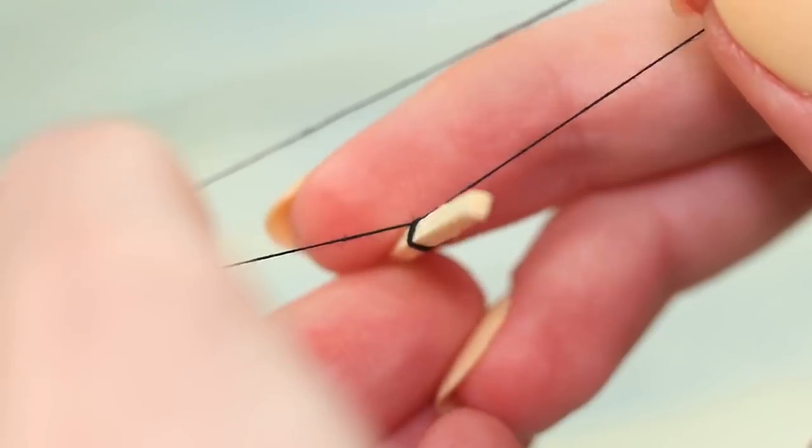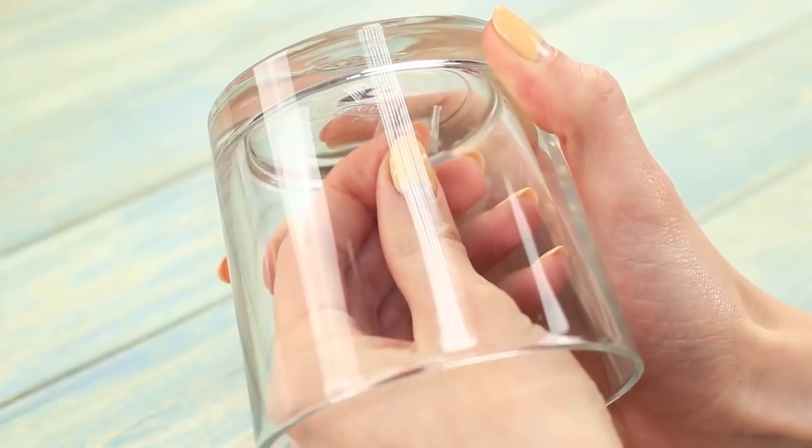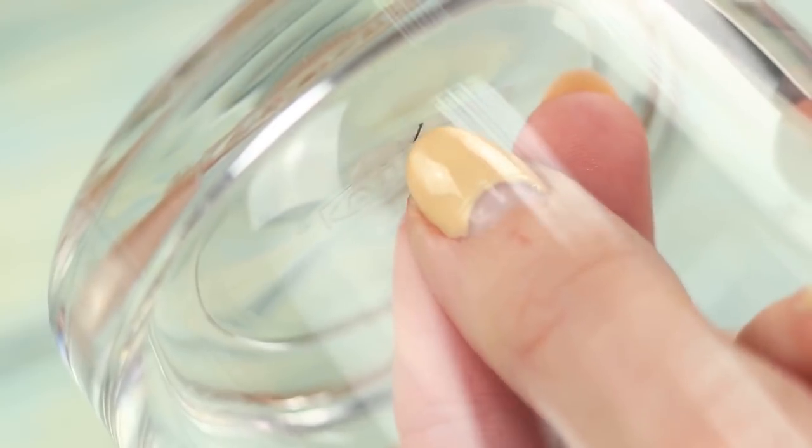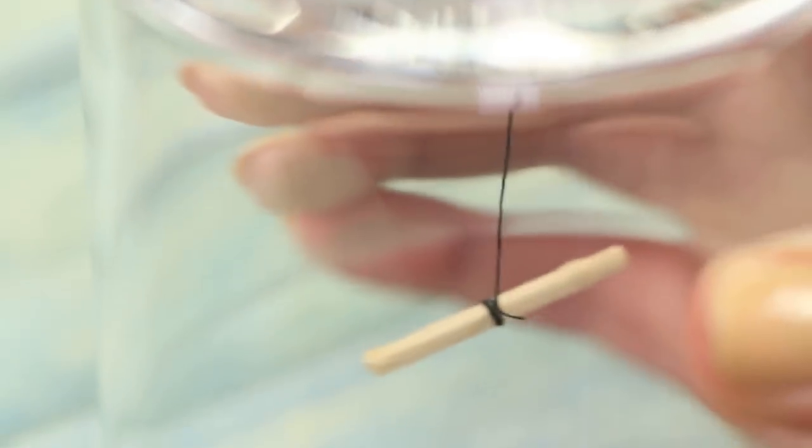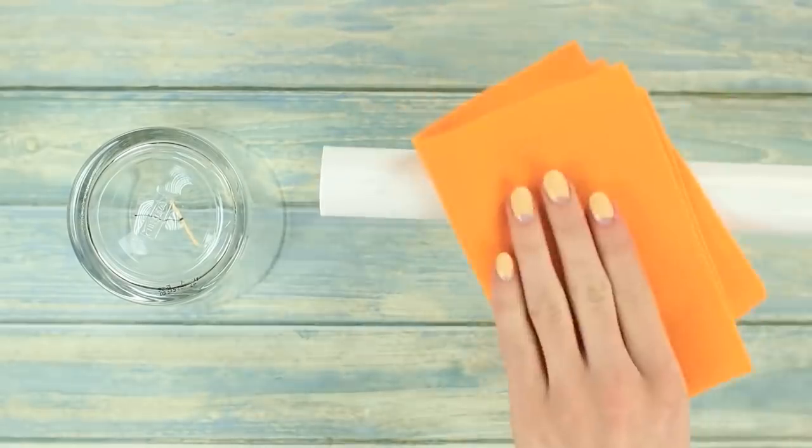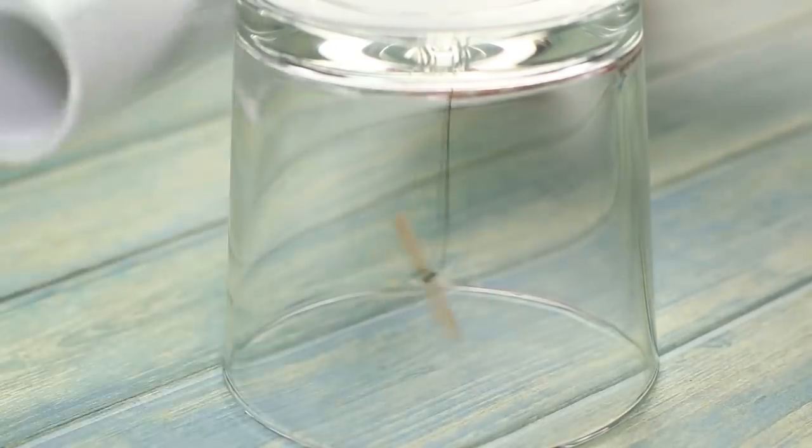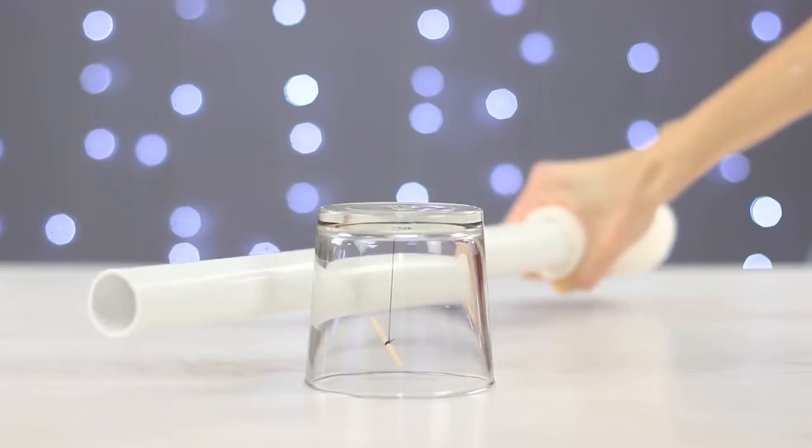Take half of a match, attach a string to it and tape it to the bottom of a glass. Turn the glass upside down. Rub a plastic tube with a woolen cloth and bring it near the glass. The match starts to dance and follow the tube.